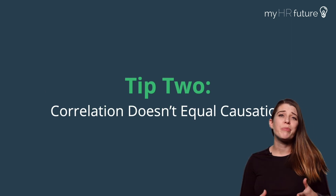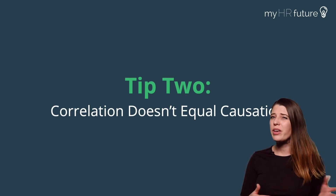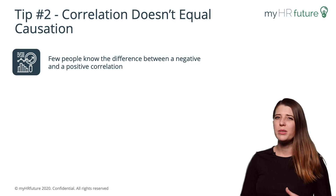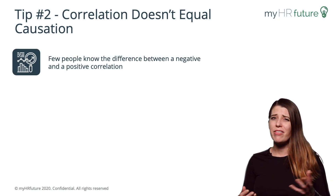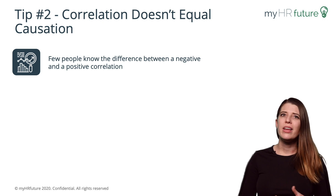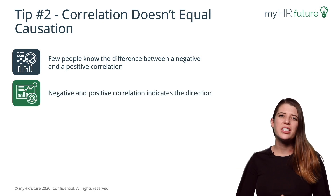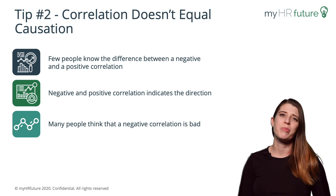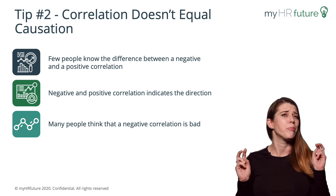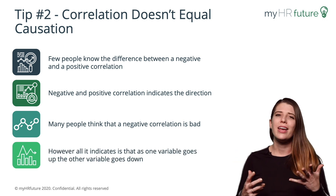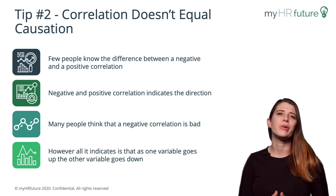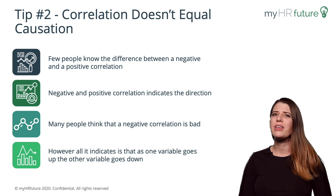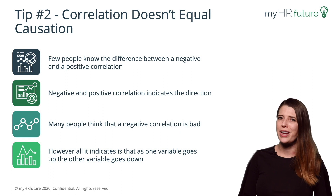Tip number two: many people know that correlation doesn't equal causation, but few people know the difference between a negative and a positive correlation. Negative and positive correlations just indicate the direction that it's heading, and too many people think that a negative correlation is bad. It really is just saying that as one variable goes up, the other variable goes down, and it is one of the more commonly confused areas.